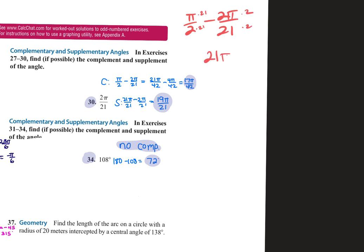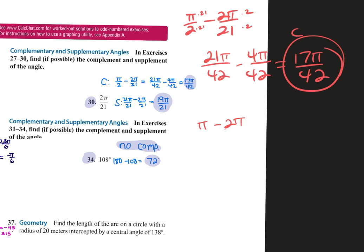So 21π over 42 minus 4π over 42, and I get 17π over 42. That's your complement. And then your supplement would be π minus 2π over 21. So this is 21π over 21, and that's 19π over 21.